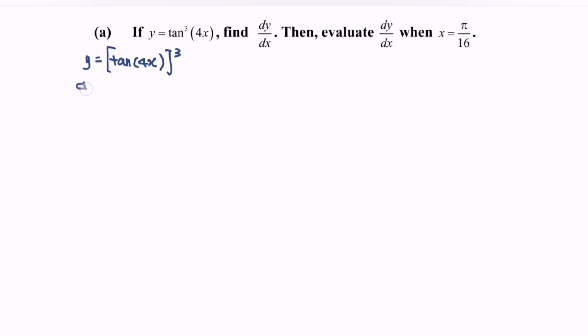So differentiate the y with respect to x and we will have focus on the power 3 bracket tangent with the angle 4x power 2. Next, focus on the internal function where we have the tangent, differentiate tangent and we will have second square with the angle 4x.